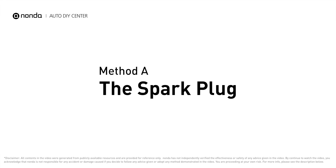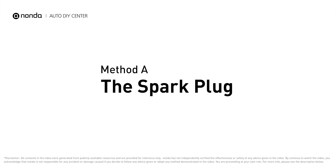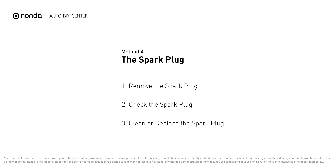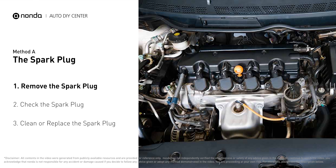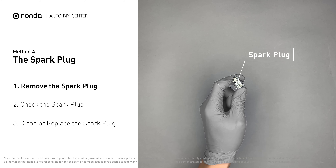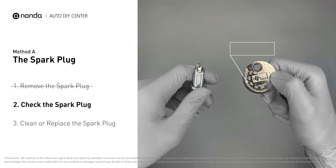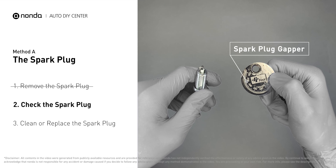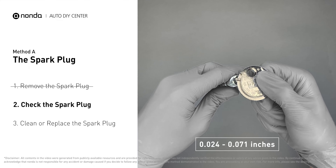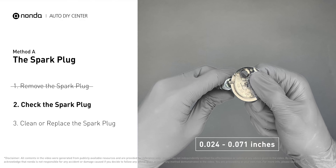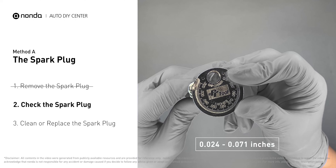Method A: the spark plug. The spark plugs are located at the engine end of the wires, under the plug covers that attach them. First, carefully remove the spark plug. Use a spark plug gapper to check the spacing of this spark plug. Normally, the spacing should be between 0.024 to 0.071 inches.